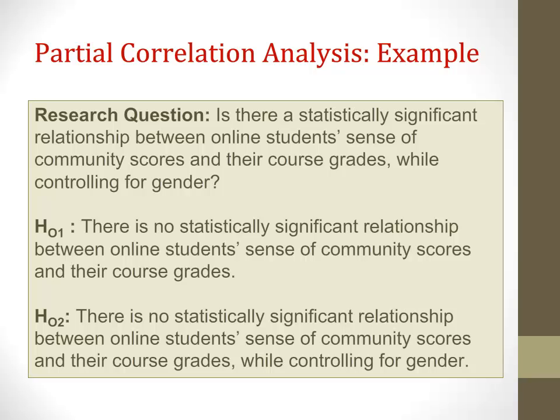Since the researcher is interested in the relationship between two variables while removing the influence of the third — in this case gender — a partial correlation is the most appropriate analysis. You'll notice there are two null hypotheses listed. This is because in a partial correlation analysis, you not only report the partial correlation results, you also report the zero-order correlation results. You compare these two analyses to determine the influence of the covariate or intervening variable.